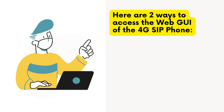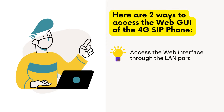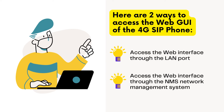Before connecting and configuring the phone with RPPBX, you need to access the web GUI of the 4G SIP phone. You can access the web interface through two ways. The first is to access the web interface through the LAN port. The second is to access the web interface through the NMS network management system, when it's not available through the LAN port.